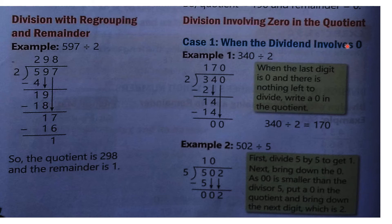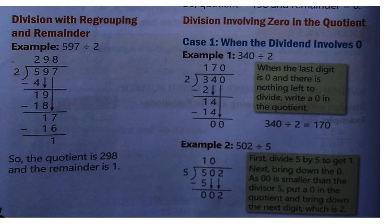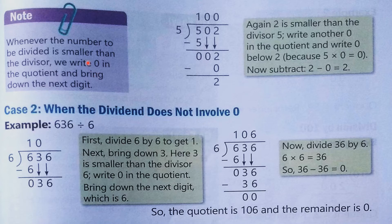When the dividend involves 0: we do it the simple way. We start with 3. 2×1=2, since 3 is not there we take 2. So 3 minus 2 is 1, and 4 comes down making 14. 2×7=14. Then this 0 is left, so 2×0=0. Remember: whenever the number to be divided is smaller than the divisor, we write 0 in the quotient and bring down the next number.